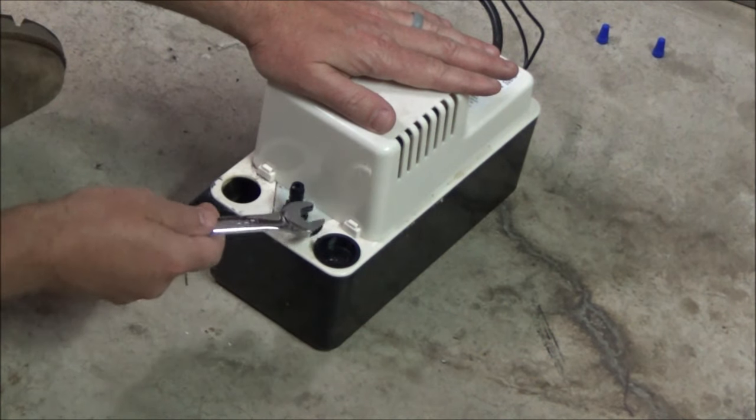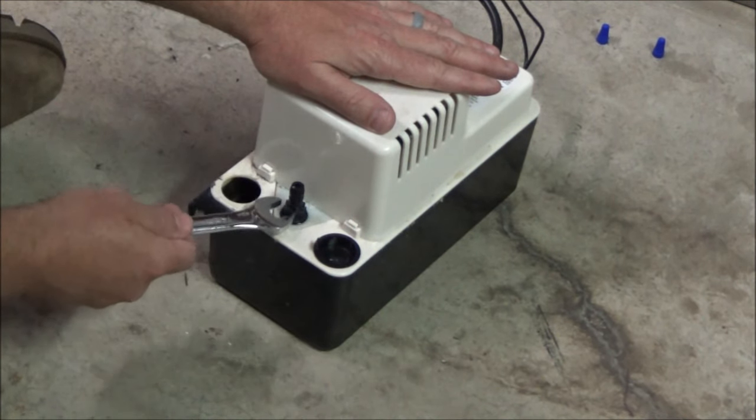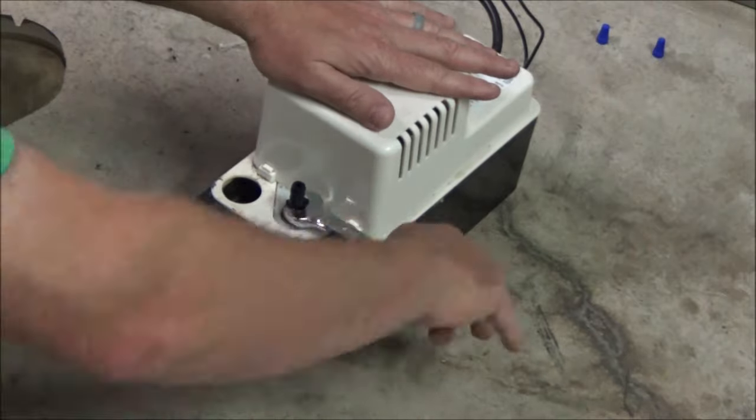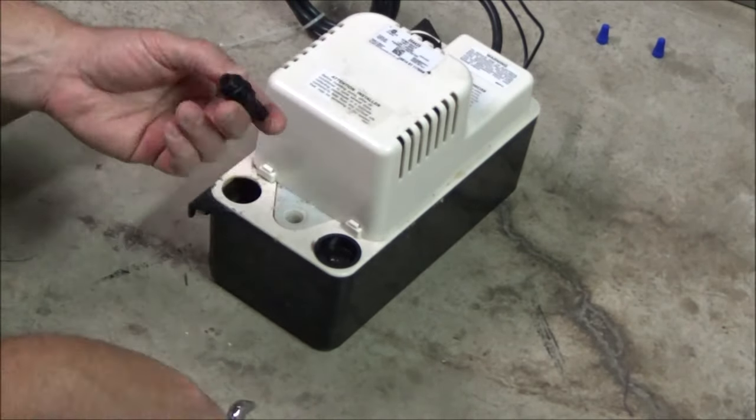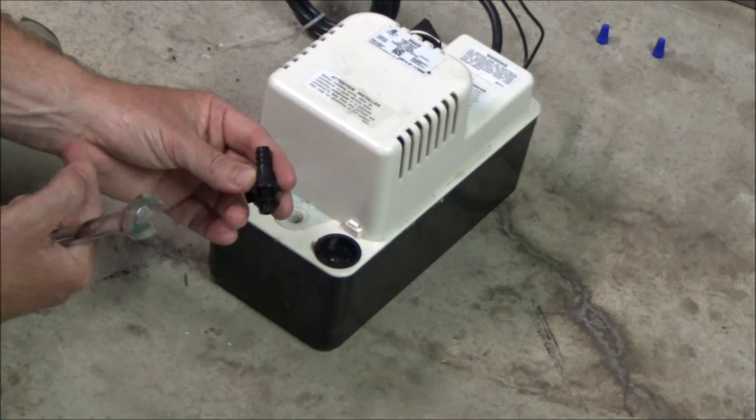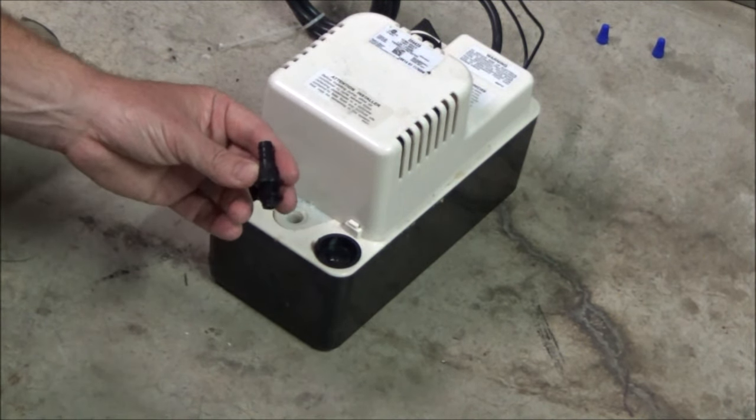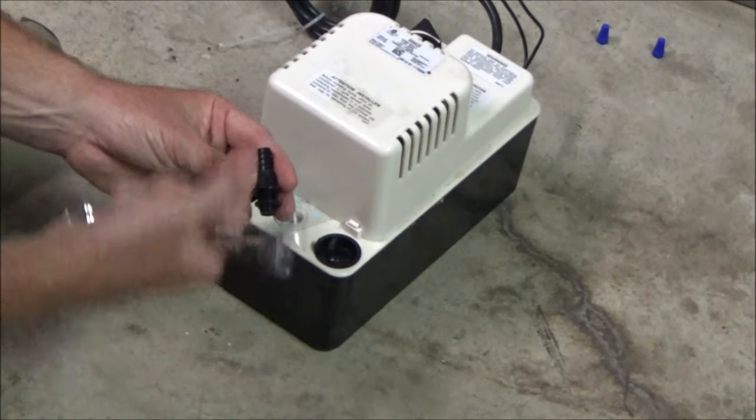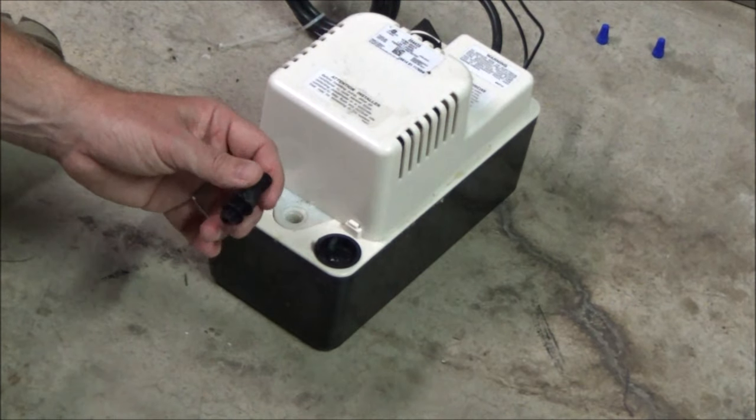Then I'm going to take out the check valve with a 14 millimeter wrench. This will only let water through one way, so what you want to do is blow some air through here this way or shoot some warm soapy water through here just to make sure you don't have any crud built up in there.